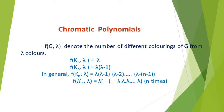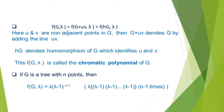Next we have one result: f(G, lambda) = f(G + uv, lambda) + f(HG, lambda), where u and v are two non-adjacent vertices in G. Here G + uv denotes G with the line uv added, and HG denotes the homomorphism of G which identifies u and v — that is, it merges the two non-adjacent vertices u and v. The proof of this result is simple, so it is not given here.